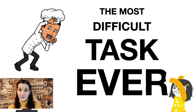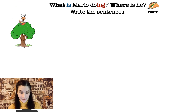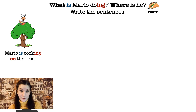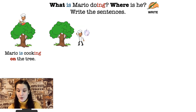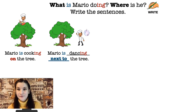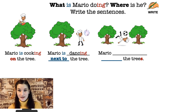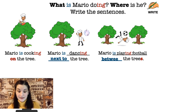And it's time for the most difficult task — now you will have to write a little bit about our friend Mario. What is Mario doing and where is he? Write the sentences. Let's look at picture number one — Mario is cooking on the tree, so Mario is sitting on the tree and cooking. Picture number two: pause the video and write the sentence yourself and then we will check it together. Now Mario is dancing next to the tree. Picture number three: pause the video and write the answer in your copy books. Mario is playing football between the trees — we can see two trees and Mario is playing football between them.